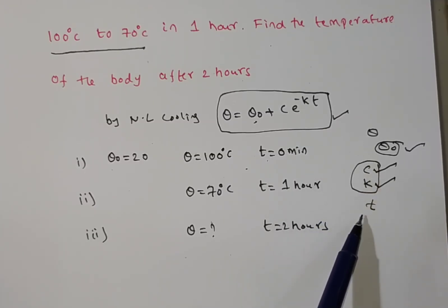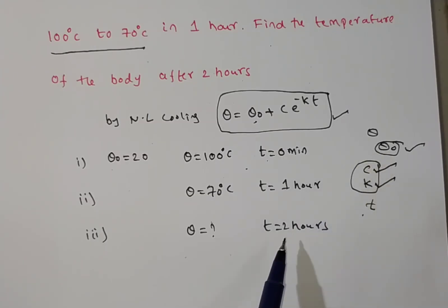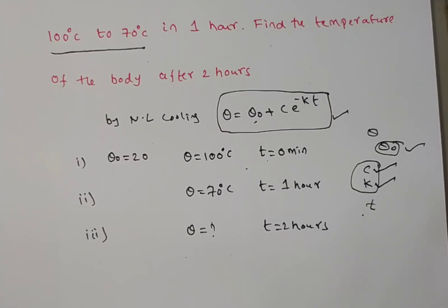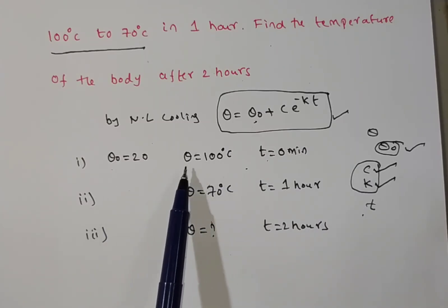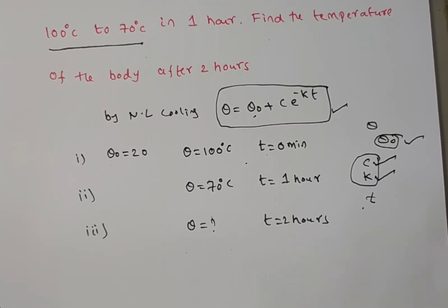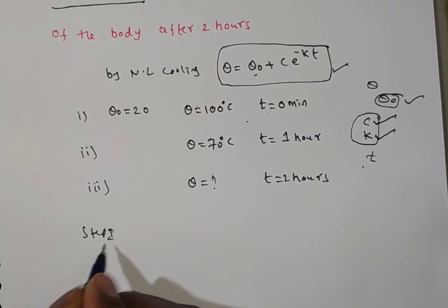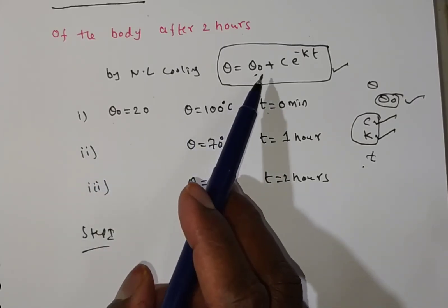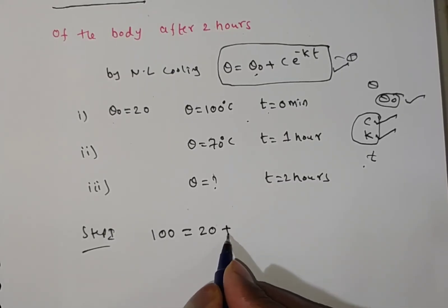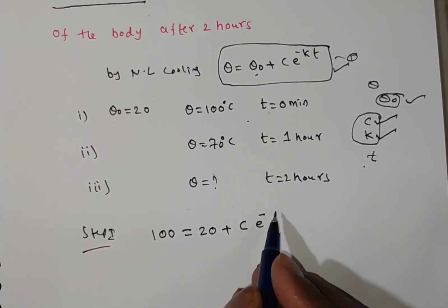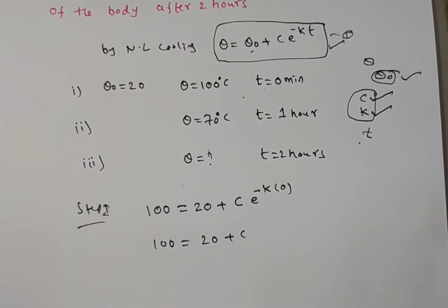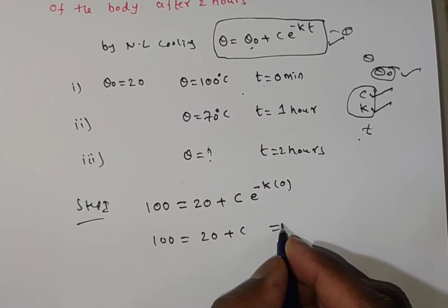The unknowns remaining are theta and T. If T is given, we can find theta, and if theta is given, we can find T. Step 1: substitute the first data into the formula. Theta is 100, theta naught is 20, T is 0. So 100 equals 20 plus C times e to the power of minus 0. Since e to the power 0 is 1, we get C is equal to 80.